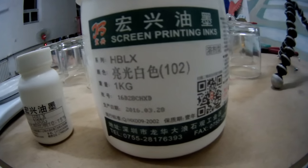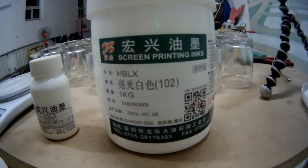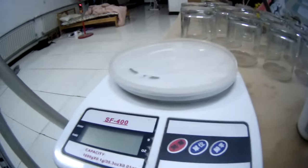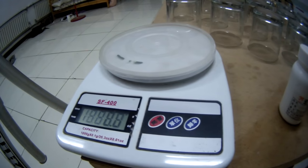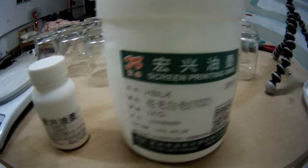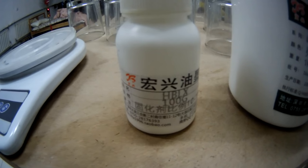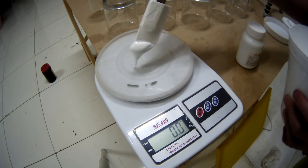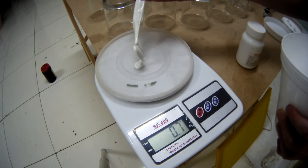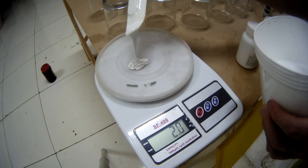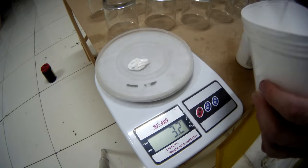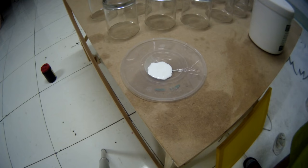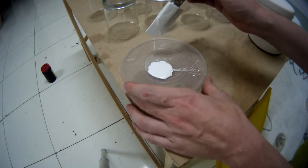So this is my ink, HBLX, whatever that means. It's for glass. And it has a hardener, so I'd assume it's an epoxy. I'm not sure though. I measure it by weight. Okay, so I'm gonna do 10 grams. And this is 15%, so 1.5 grams of the hardener. Actually, I'd probably get away with 5 grams. And mix this up.